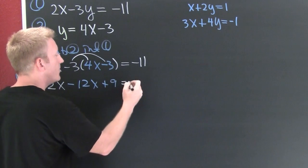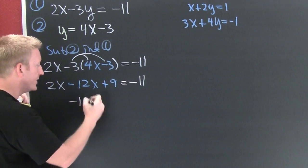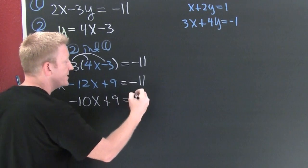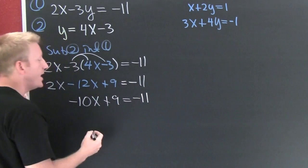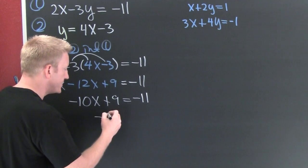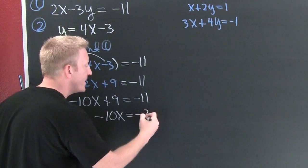And then that's gonna equal minus 11. Finish him. Gather, collect, and combine. Plus 9 is minus 11. Subtract that 9 off each side and I'm gonna have minus 10x is equal to, wait for it, minus 20.